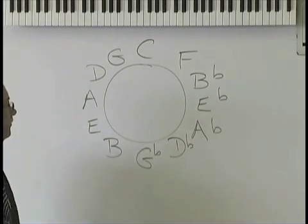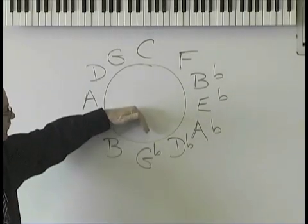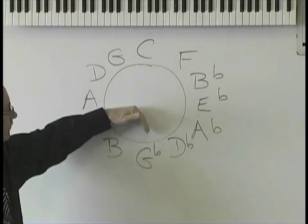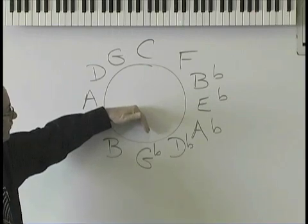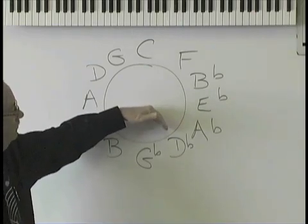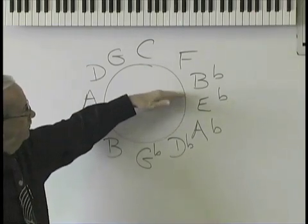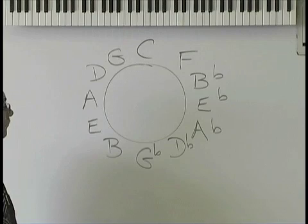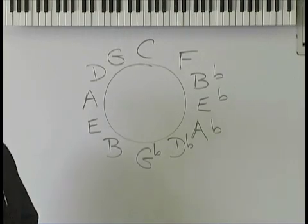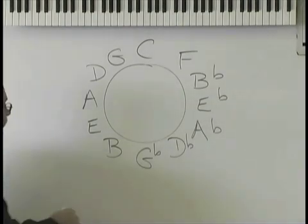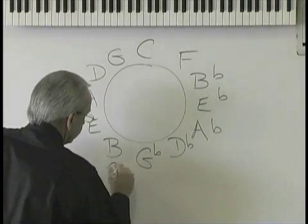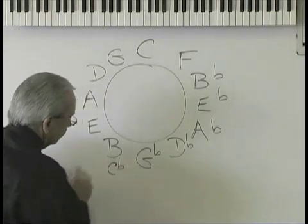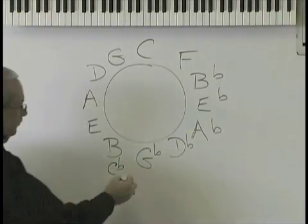Alright, six o'clock. Key of G-flat has six flats. They are B, E, A, D, G, and C-flat, which is a B. Put it in parentheses. Under the B, put a C-flat. And under the G-flat, put an F-sharp.